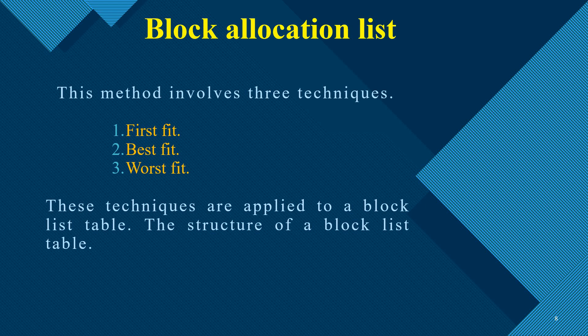First fit means the process is loaded into memory or disk using the first free space that is allocated. Best fit means it analyzes the empty spaces and chooses the memory partition that is nearest or equal to the size of the process. Worst fit means it first chooses the partition that is very large or enormous in size, and the data gets loaded into that partition.